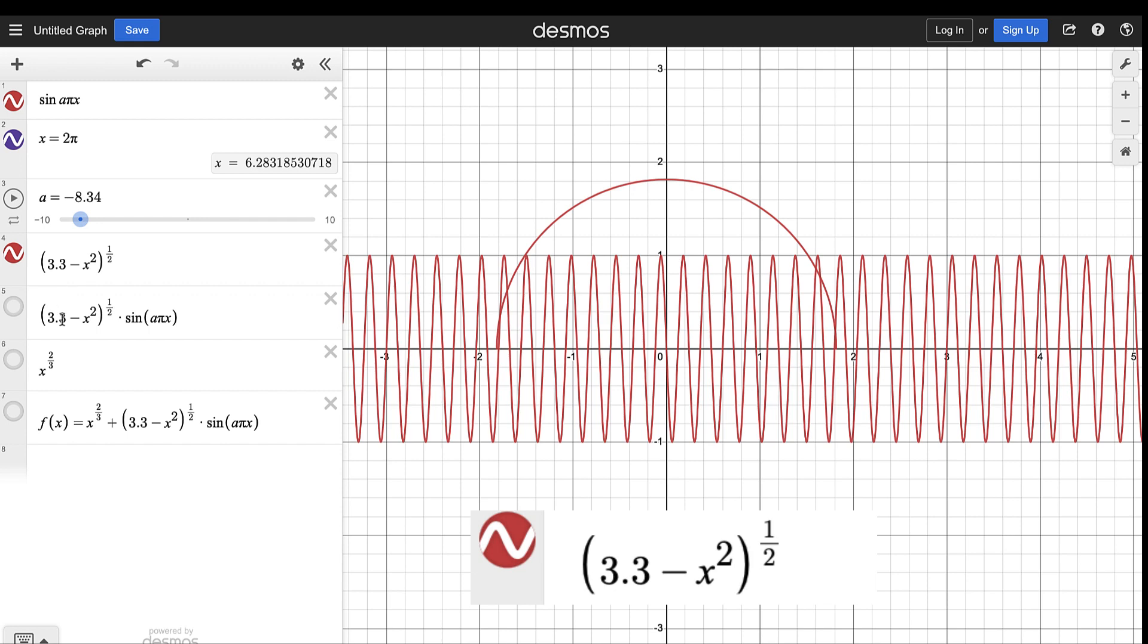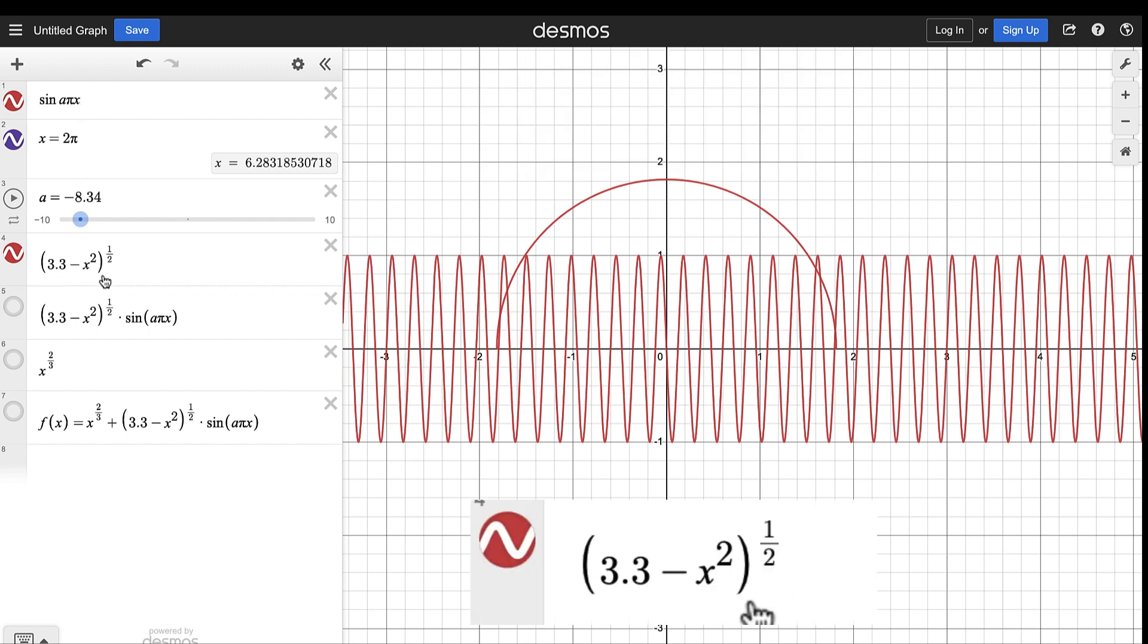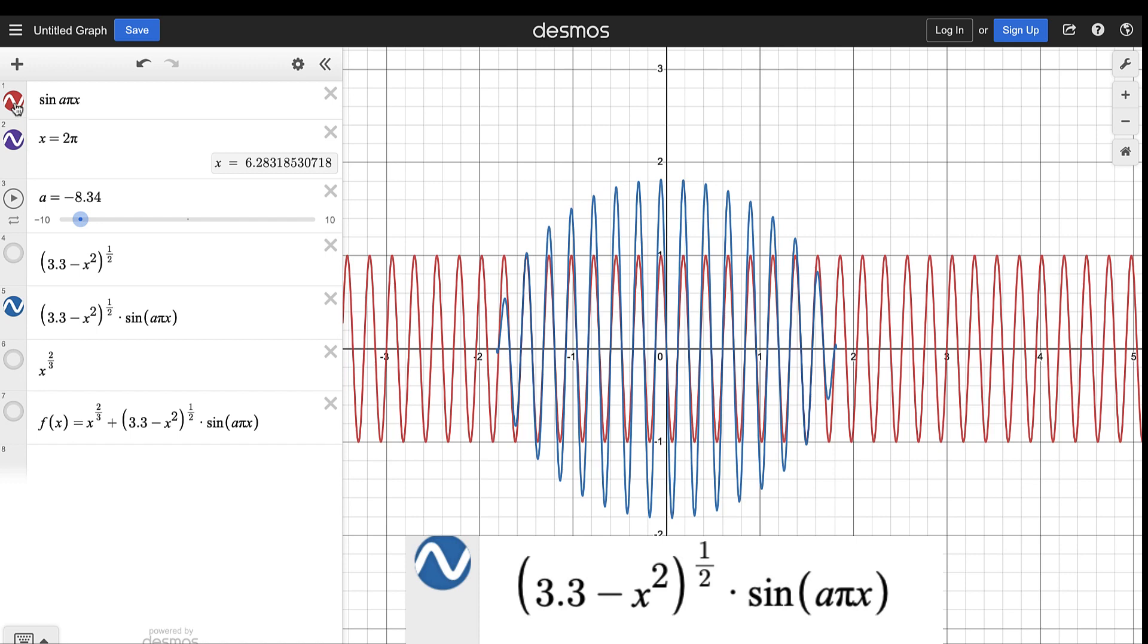So what I'm going to do now is multiply sine aπx by this function, the quantity 3.3 minus x squared all raised to one half. And here is now the result.